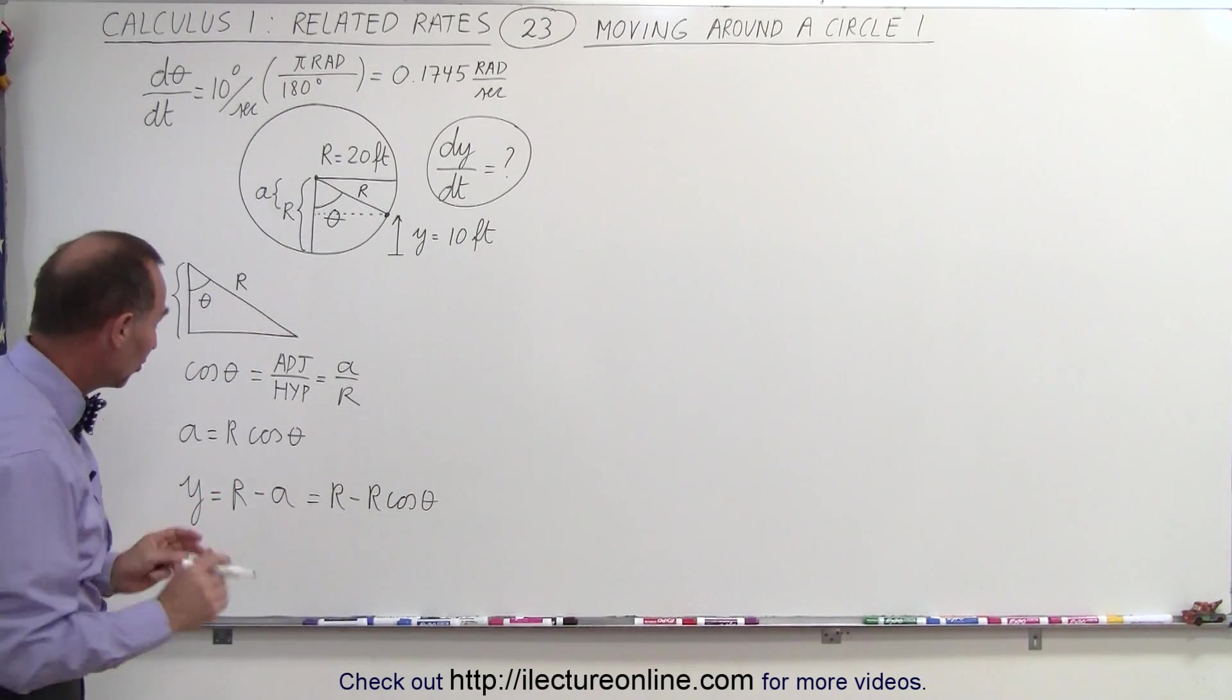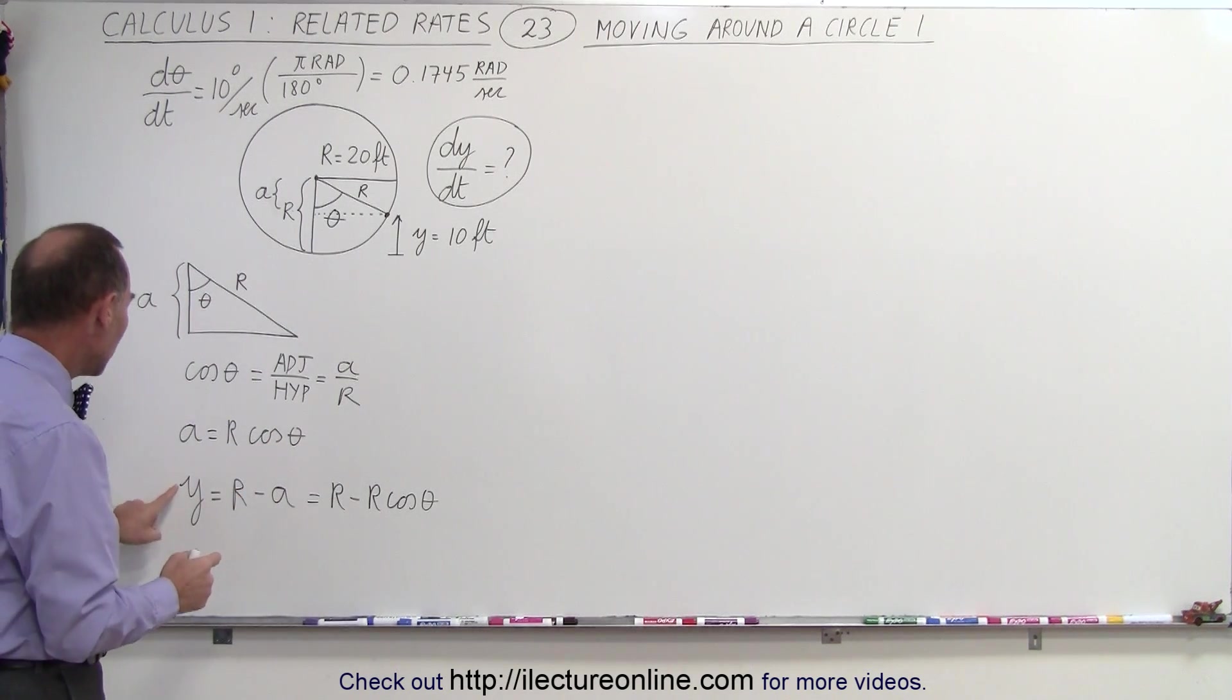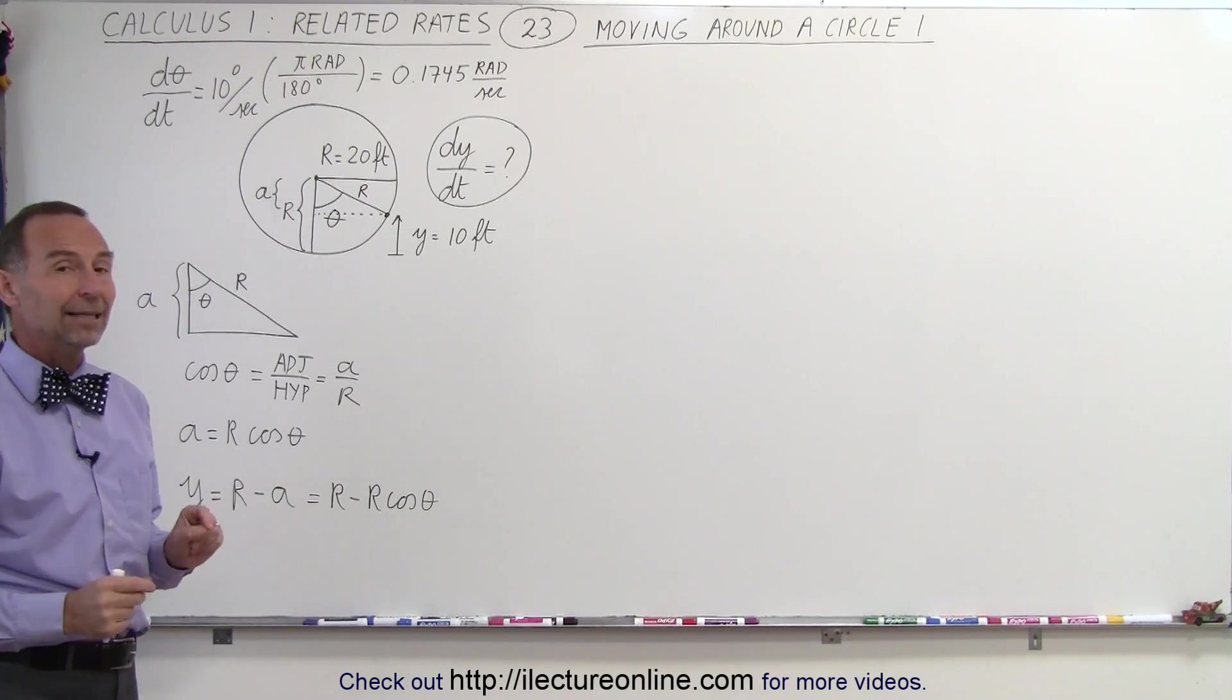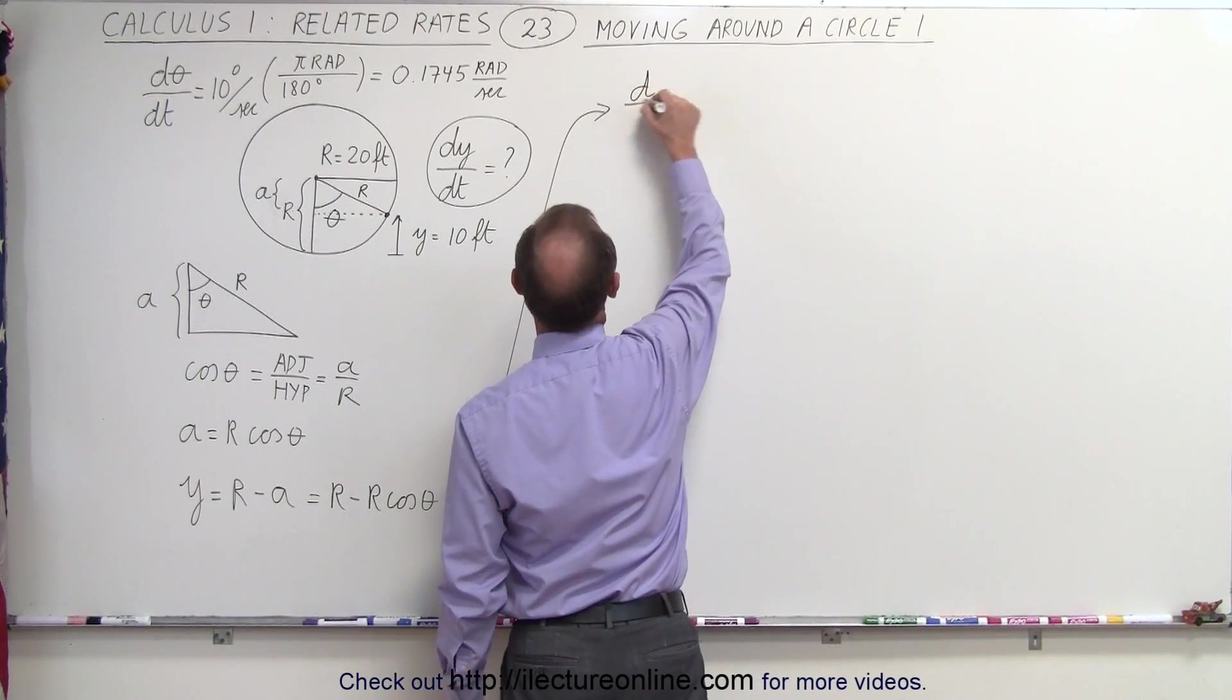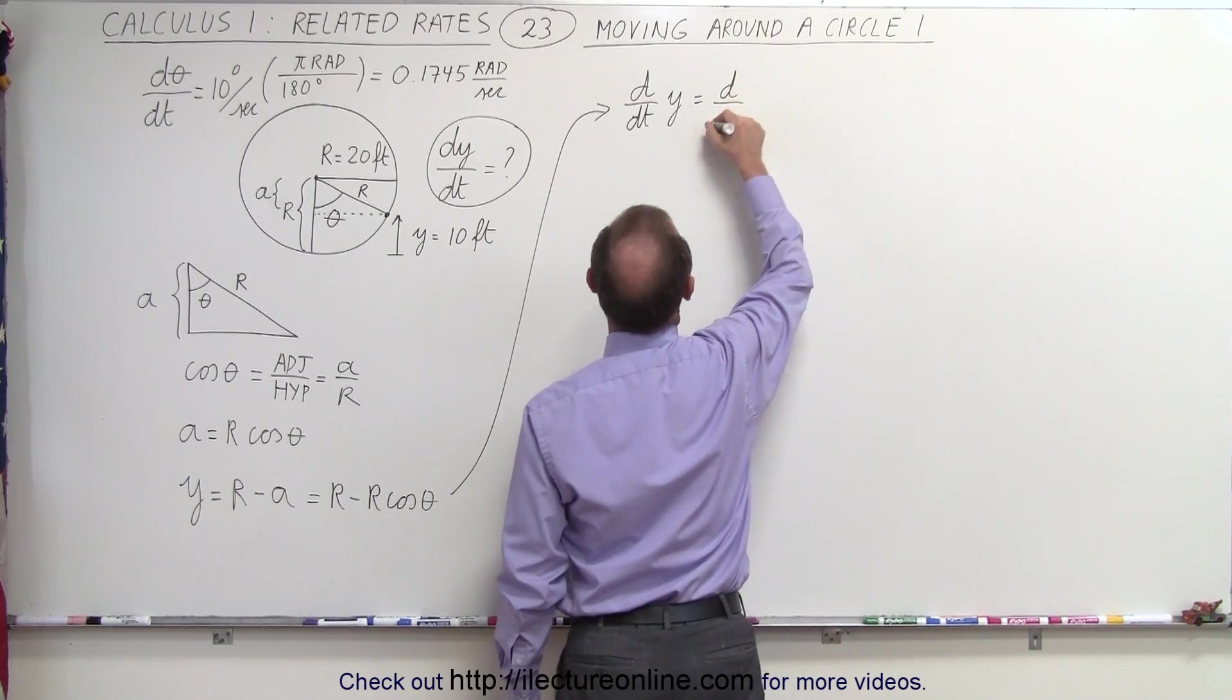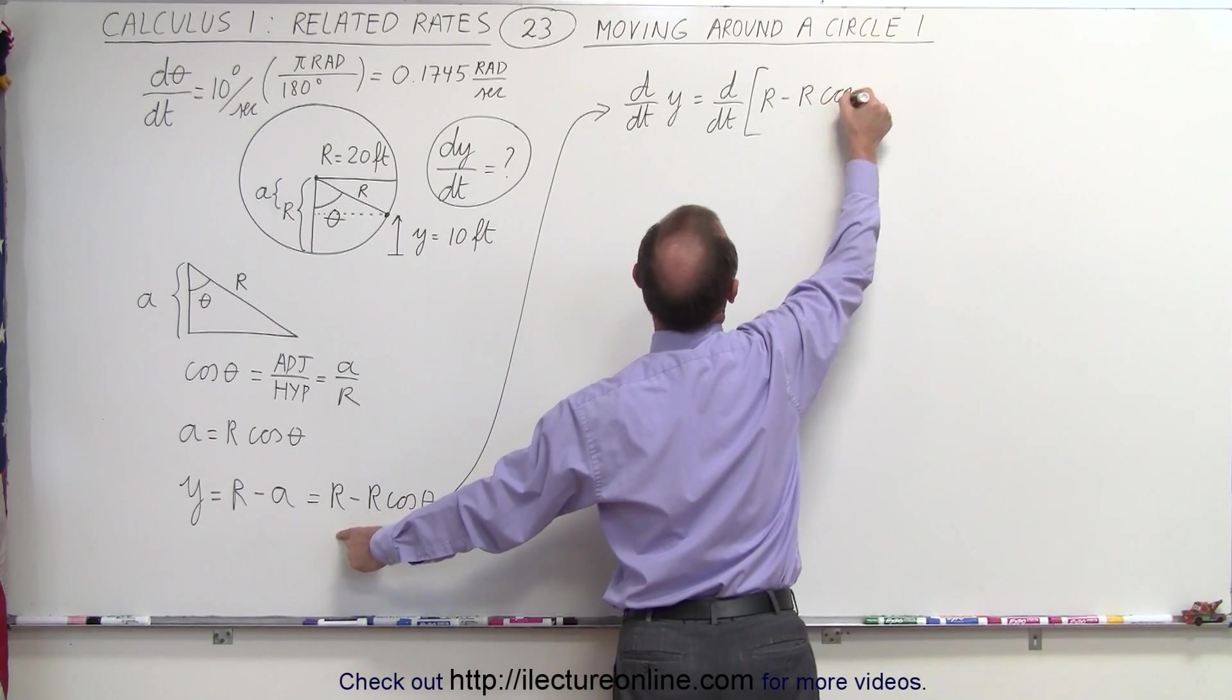So now that we have a relationship between y, r, and theta, I'm now able to take the derivative of both sides and find dy dt in terms of dr dt and d theta dt. So let's go ahead and do that. So moving up here, we're going to take the derivative, the d dt of the left side, and set it equal to the d dt of the right side. The right side, of course, is r minus r times the cosine of theta.